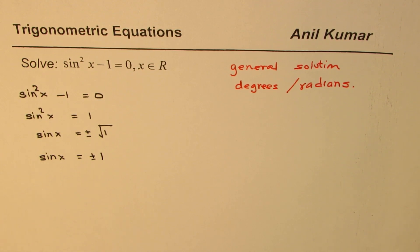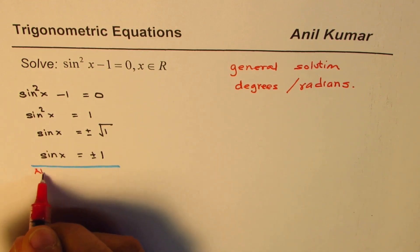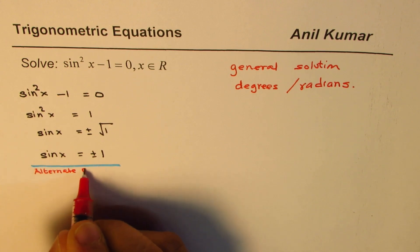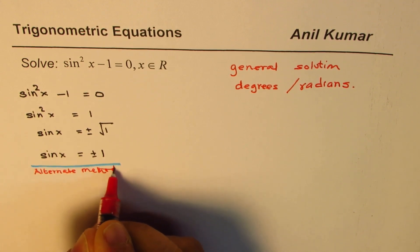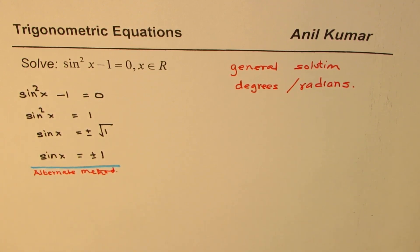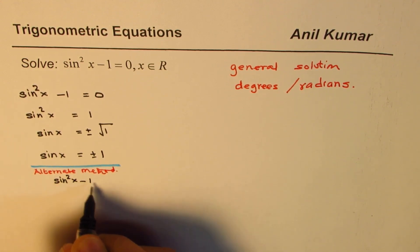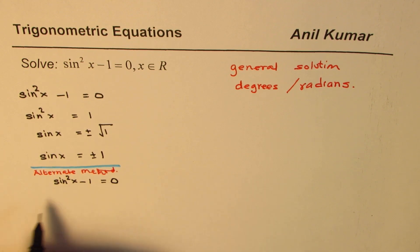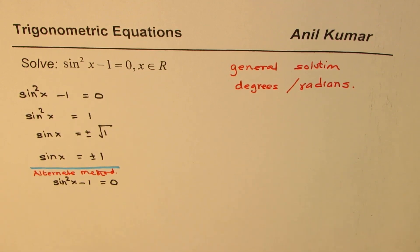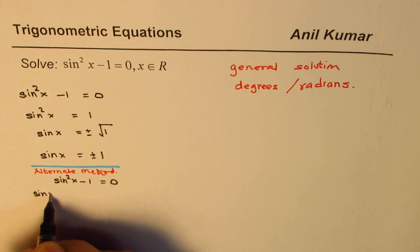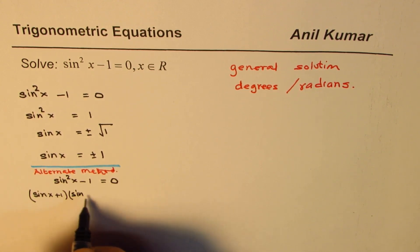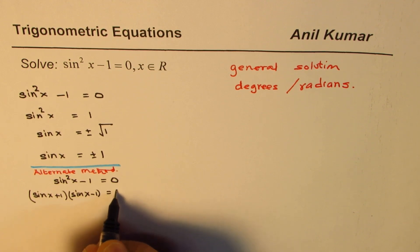Now, here is an alternate way of getting the same solution. The alternate method could be, let me write down alternate method. Let's begin with sine square x minus 1 equals to 0. We could factor this. This is the difference of squares. So, we could say sine x plus 1 times sine x minus 1 equals to 0.